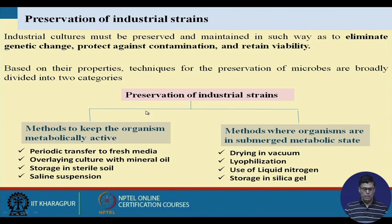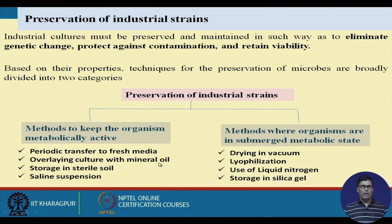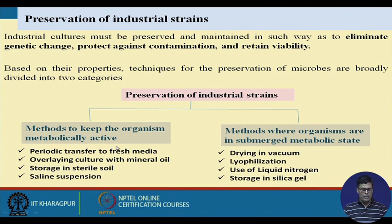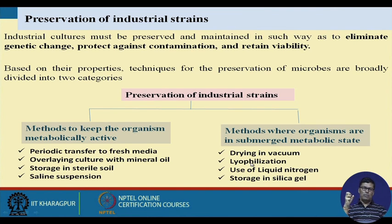Methods to keep organisms metabolically active include periodic transfer to fresh media, overlaying culture with mineral oil, storage in sterile soil, and saline suspension. Methods where organisms are kept in a submerged metabolic state include drying in vacuum and lyophilization, also known as freeze drying. In freeze drying, the organism is frozen and water molecules pass from the solid state to vapor phase, preserving the organism for up to thirty years.